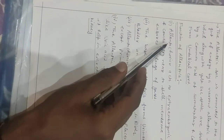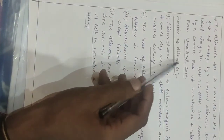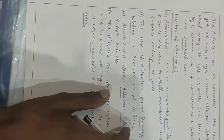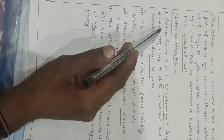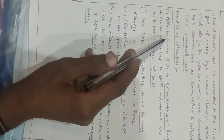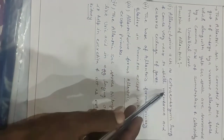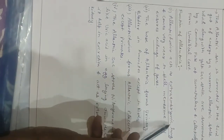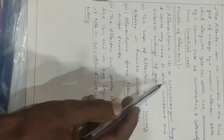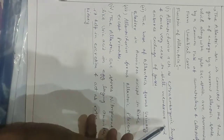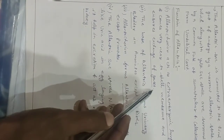Now we discuss the functions of allantois. The first function: the allanto-chorion acts as extra-embryonic lungs, coming very near to the cell membrane to ensure exchange of gases.